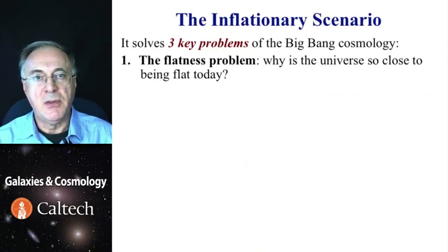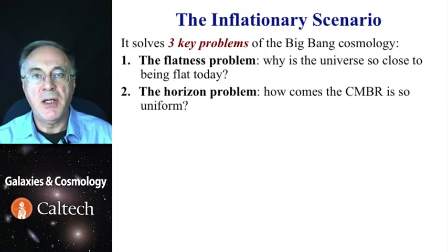The first one of those is the so-called flatness problem: Why is the universe so close to being exactly flat? The second one is the horizon problem: Why was cosmic microwave background so uniform? We'll explain both of these in a moment.